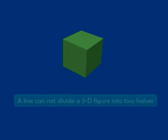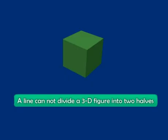Now let's look at this cube. Now can I have a line of symmetry for this cube? No. A line cannot divide this cube into two halves.